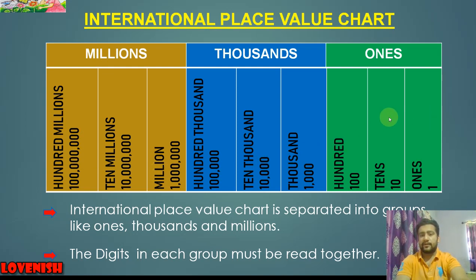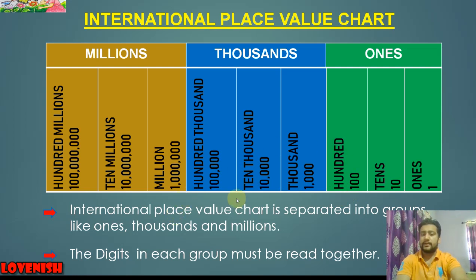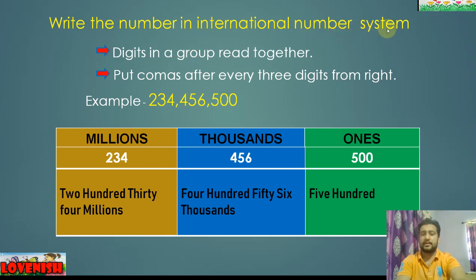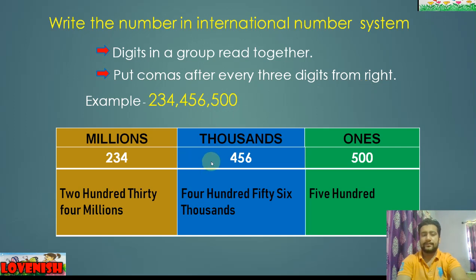In the Indian chart the first ones group has three digits, but in the international place value chart all groups are three-three digits each. The digits in each group are read together. To read a group: if there is a millions group, it will be read as a thousand-like unit. To write numbers in the international system, put commas after every three digits from the right.